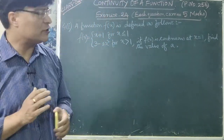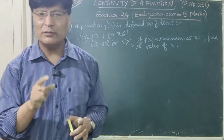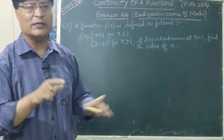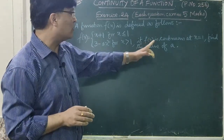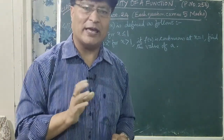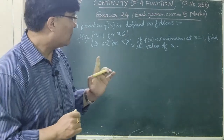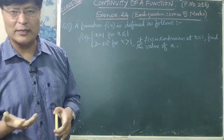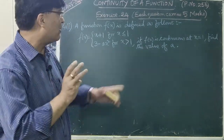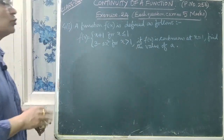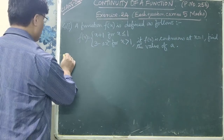We check if f(x) is continuous at x = 1. For f(x) to be continuous at x = 1, the right hand limit at x = 1 must equal the left hand limit at x = 1, which must equal f(1). All three must be equal. Since f(x) is given as continuous at x = 1, we need to find the value of a. Let us do the solution.